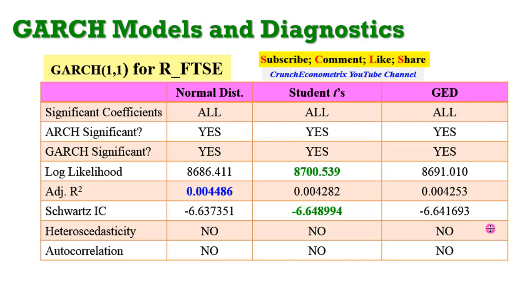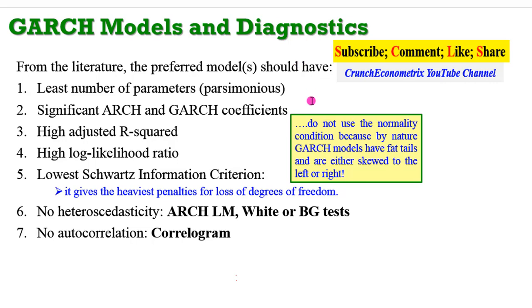Using log-likelihood, adjusted R-squared, and SIC, GED has been completely eliminated from the comparative analysis. We are now choosing between the Normal distribution and the Student's t model. It's two to one in favor of Student's t, making it the most preferred model. In the worst-case scenario where log-likelihood or adjusted R-squared are tied, always pin it down to the SIC — choose the model with the lowest SIC. In this case, the model using the Student's t error distribution is the most ideal.